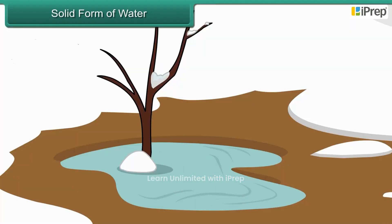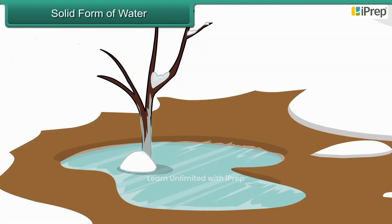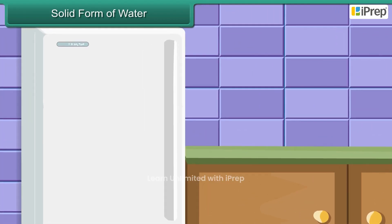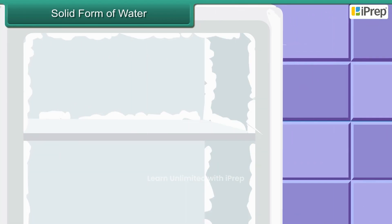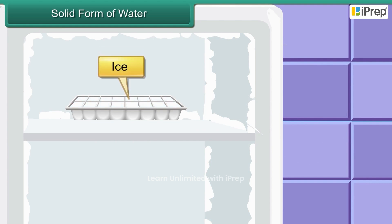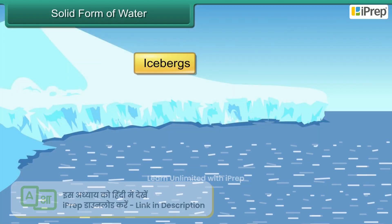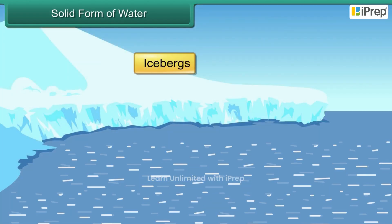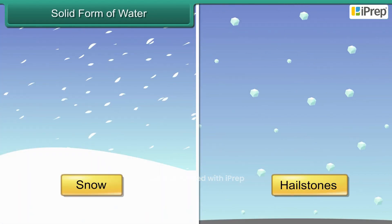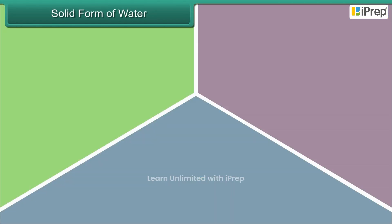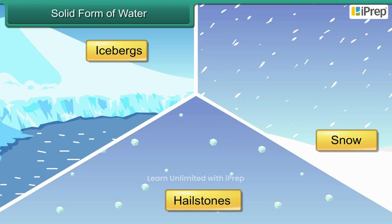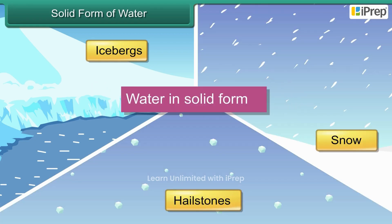Solid form of water: liquid water turns solid when cooled. At home we have seen liquid water become ice when kept in the freezer. Ice is an example of water in solid form — it is man-made. Icebergs are huge pieces of ice found in seas and oceans at very cold places. Snow and hailstones are also examples of water in solid form; however, they are naturally formed.